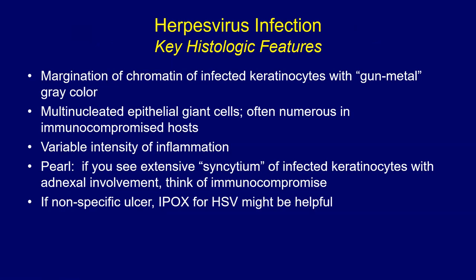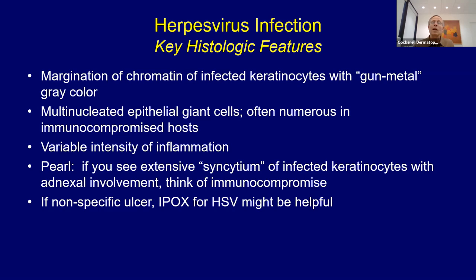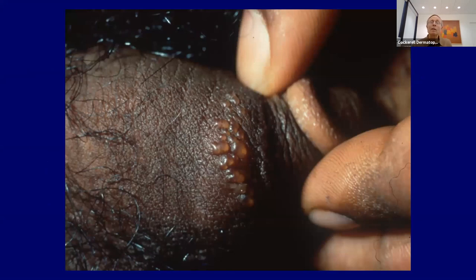We're going to look at viral processes, bacterial processes, fungal processes, and some ectoparasites. Let's start with herpes virus infection. Under the microscope you get a classic margination of the chromatin of the infected keratinocytes — they get a gunmetal gray color — and then multinucleated epithelial giant cells. These may be numerous when you're dealing with an immunocompromised patient, with or without a lot of inflammation. If you see an extensive syncytium of infected keratinocytes with involved adnexal structures, think about an immunocompromised patient. An immunoperoxidase stain for herpes can be effective.